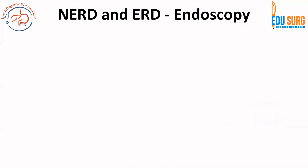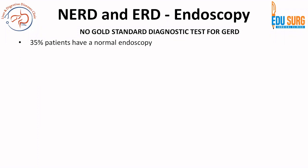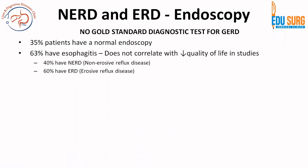Non-erosive reflux disease versus erosive reflux disease: there is no gold standard diagnostic test, and endoscopy is not mandatory upfront for every GERD patient. 35% of patients will have a normal endoscopy but still have symptoms requiring treatment, and only 60% have esophagitis — endoscopy findings do not correlate with quality of life impairment. Of those with esophagitis, 40% have non-erosive and 60% have erosive reflux disease. The Los Angeles classification grades erosive disease as A (one or more mucosal breaks ≤5 mm), B (mucosal break >5 mm), C (crossing two mucosal folds), and D (more than 75% circumferential involvement). Nearly half of these patients also have a hiatus hernia, though not all require treatment for it.